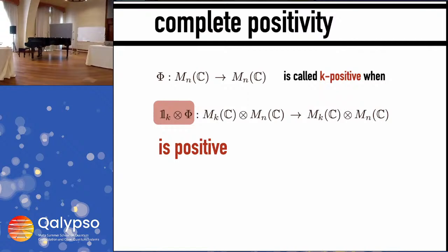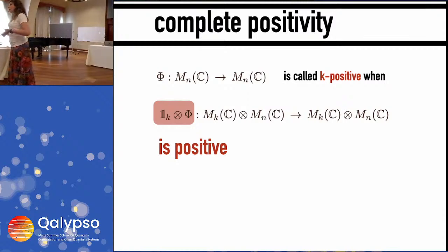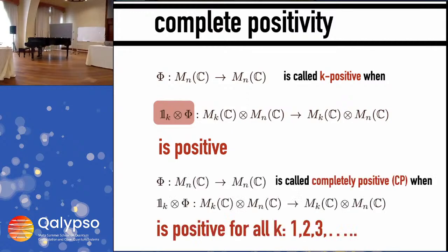Complete positivity is stronger than positivity. A map is called k-positive whenever the composition of the map with the identity in k-dimensional space is positive. Complete positivity means this holds for all k. The problem is ultimately caused by entanglement — entanglement forces us to require complete positivity. In quantum information theory, completely positive and trace-preserving maps are called quantum channels.